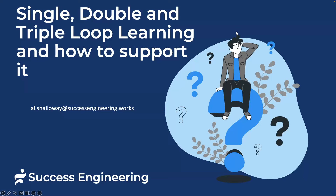I'm going to talk about single, double, and triple loop learning. These are different learnings about how we're doing our work, what the assumptions are underneath it, how we can learn faster, and how to support the learning process.